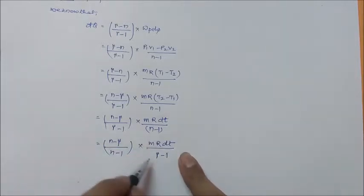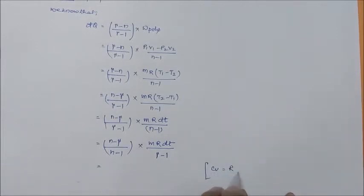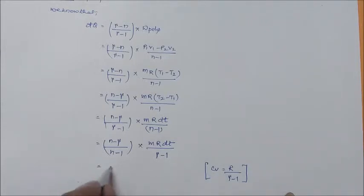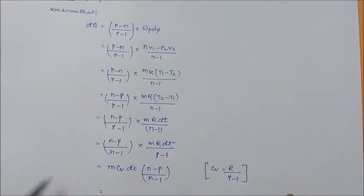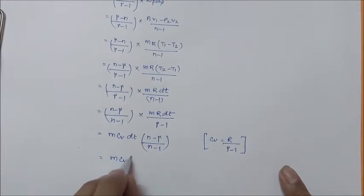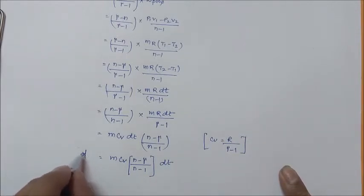We know that R/(γ - 1) is Cv — Cv is the specific heat for a constant volume process. So substituting, we have dQ equals m·Cv·(n - γ)/(n - 1)·dT. Rearranging: dQ equals m·Cv·(n - γ)/(n - 1)·dT.